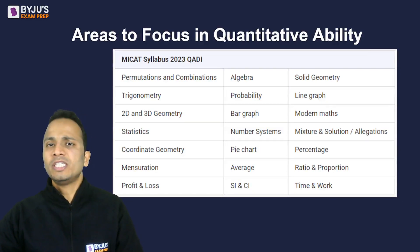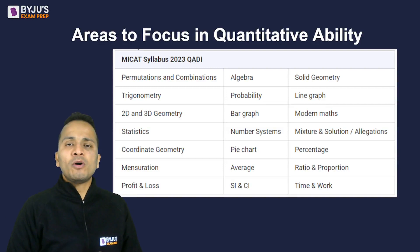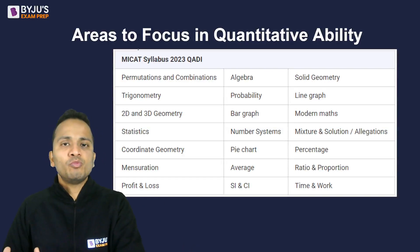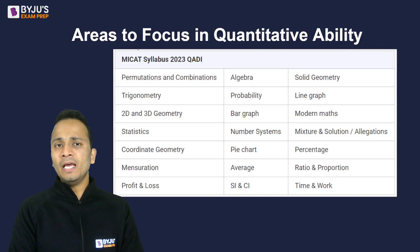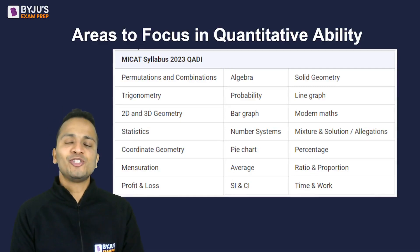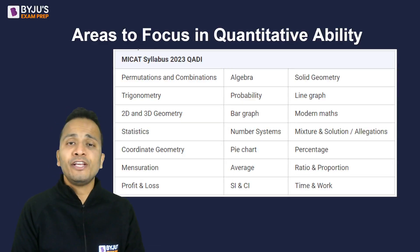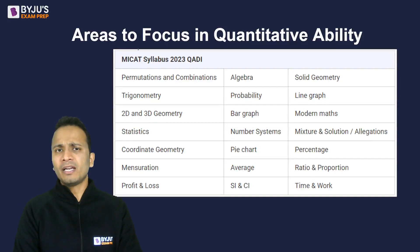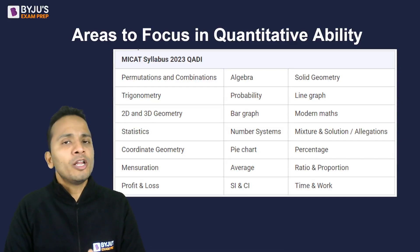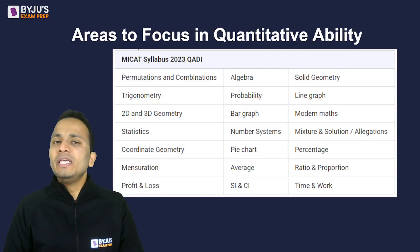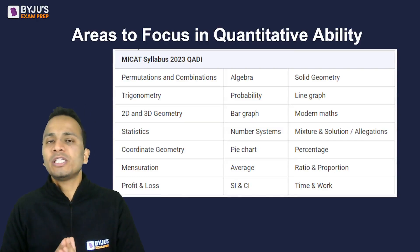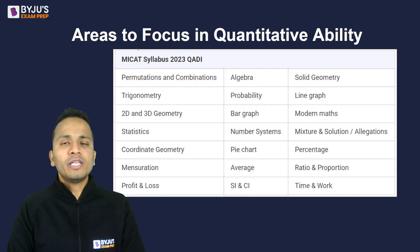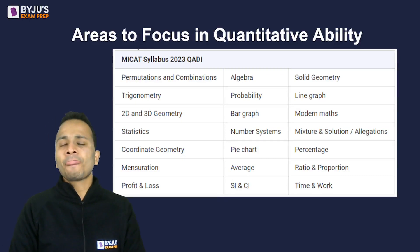Looking at the different areas we need to focus on in quantitative ability: starting from arithmetic, algebra, geometry, to permutation and combination, modern mathematics, and set theory — each and everything is being asked in this examination. The level of difficulty is not as high as what we see in IFT, CAT, or XAT. The level of difficulty will be on the lower side and you will be able to attempt each question in an average of 45 to 60 seconds.